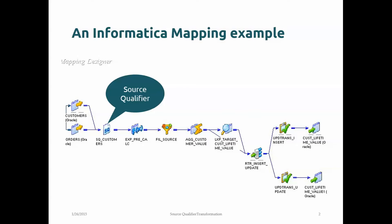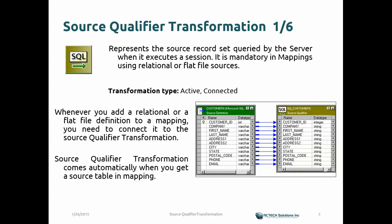The Source Qualifier Transformation is an active transformation. In Informatica, transformations come in two varieties: active and passive. Active means the incoming data can be changed or altered by this transformation. Any transformation which alters the incoming data flow is called an active transformation.